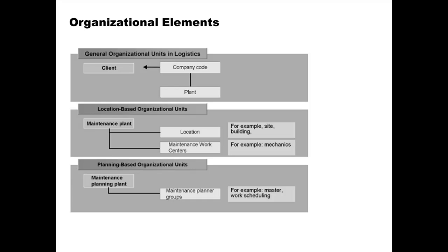Another important organization level is called a location, which we'll see later. There are also maintenance work centers. In manufacturing we've already seen work centers — they could be machines, groups of machines, a person, or a group of people; they are anything that has production capacity. Maintenance work centers are work centers used for plant maintenance purposes rather than manufacturing purposes, and a work center can even be a person, such as a mechanic, because a person has capacity to perform work.